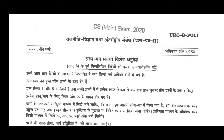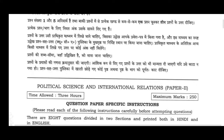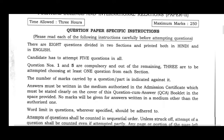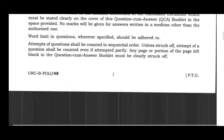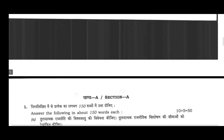This is the UPSC Civil Service Main Examination 2020, Political Science and International Relations, Paper 2. Total marks are 250. There are 8 questions divided in 2 sections, printed both in Hindi and English. Candidates have to attempt 5 questions in all. Questions number 1 and 5 are compulsory, and out of the remaining, 3 are to be attempted choosing at least 1 question from each section.